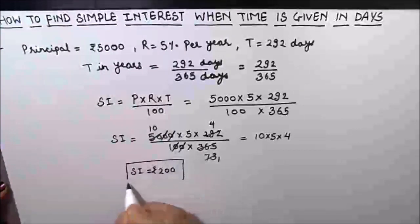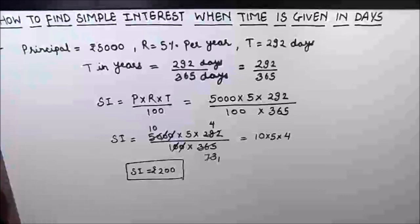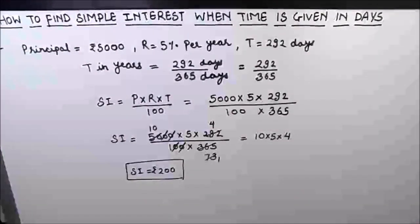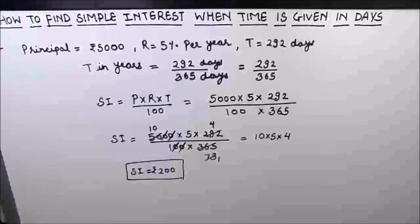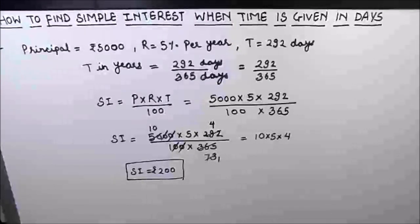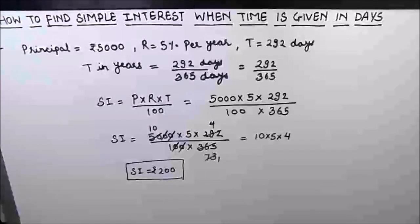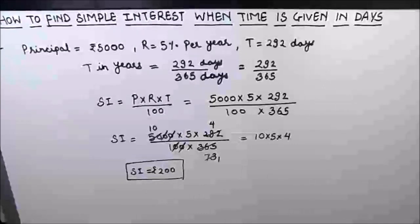So 200 rupees is our simple interest when the time period is given as 292 days. Now you know how to find simple interest when the time period is given in days. I hope this video is helpful to you — if you like the video, please hit the like button and subscribe to my channel for more math videos. Thanks for watching!